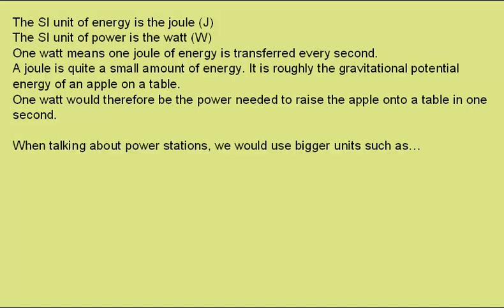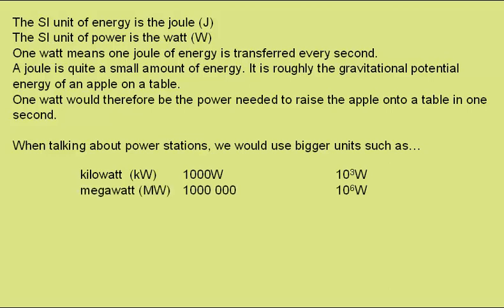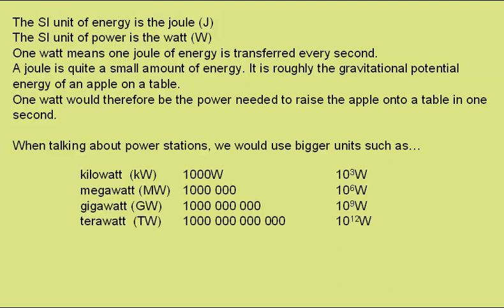When dealing with power stations, we need bigger units than watts and joules. For instance, we might use kilowatts — a thousand watts, or ten to the three watts. Megawatts — a million watts, or ten to the six watts. Gigawatts, which is ten to the nine. Or terawatts, ten to the twelve.